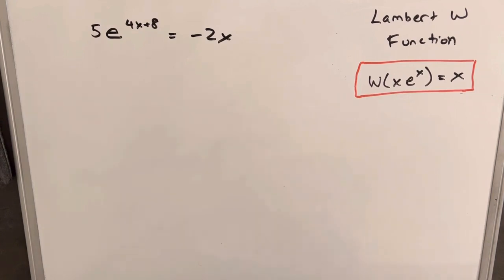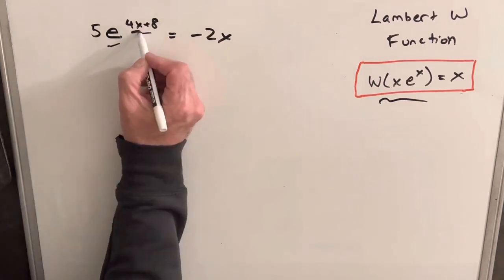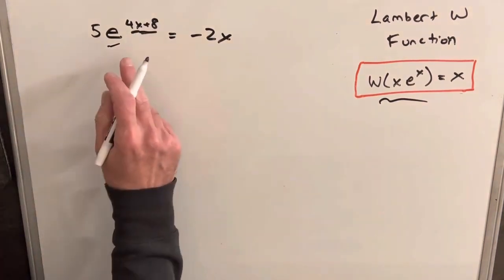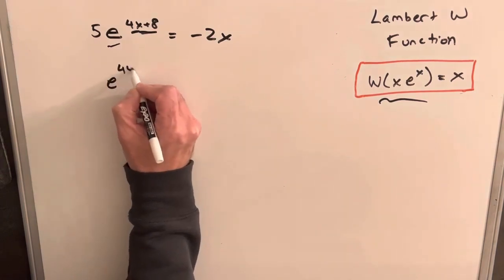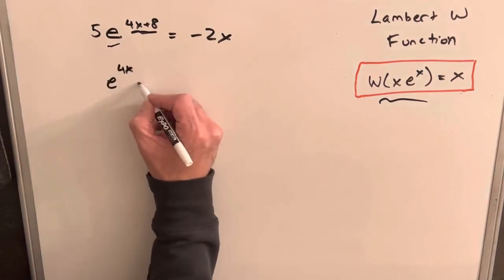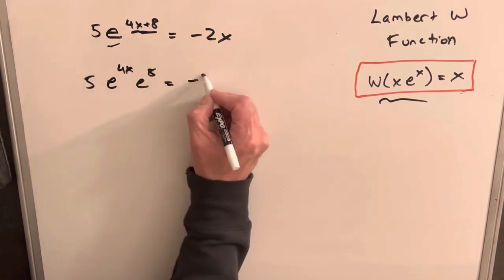Okay, so to get started, we want to use this tool on the right. We want to get it into that form because it's going to help us simplify this. We don't really like this going on here, so let's actually break this up, and we can rewrite this as e to the 4x times e to the 8.